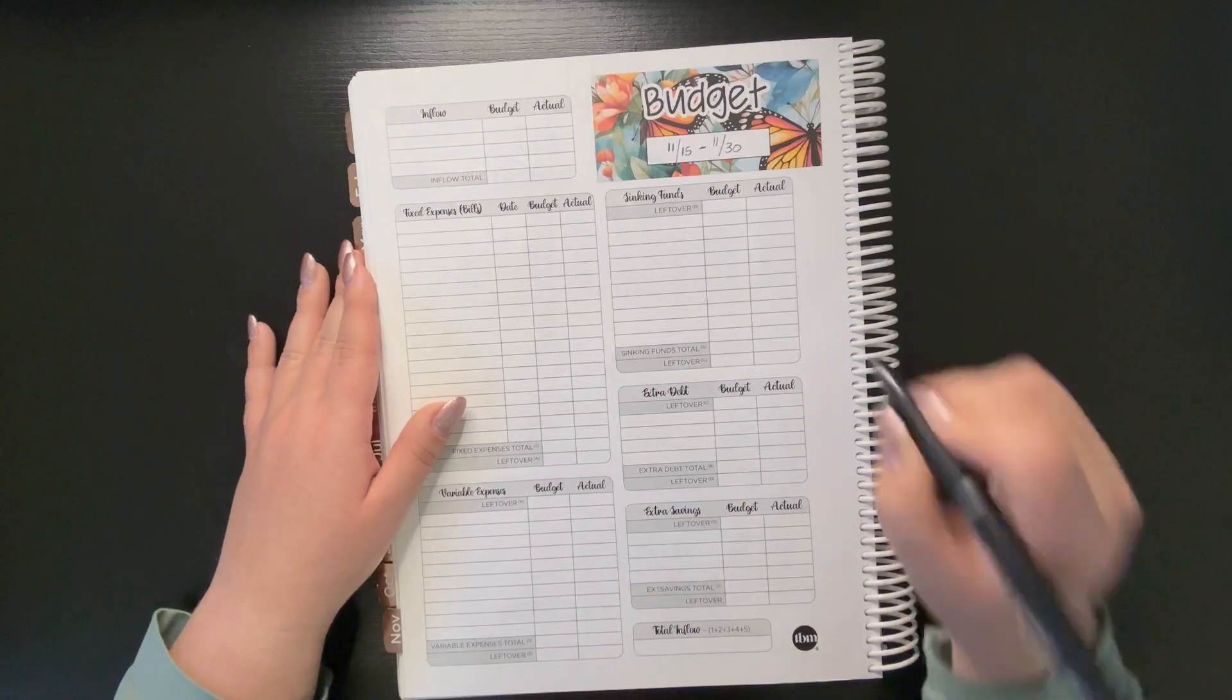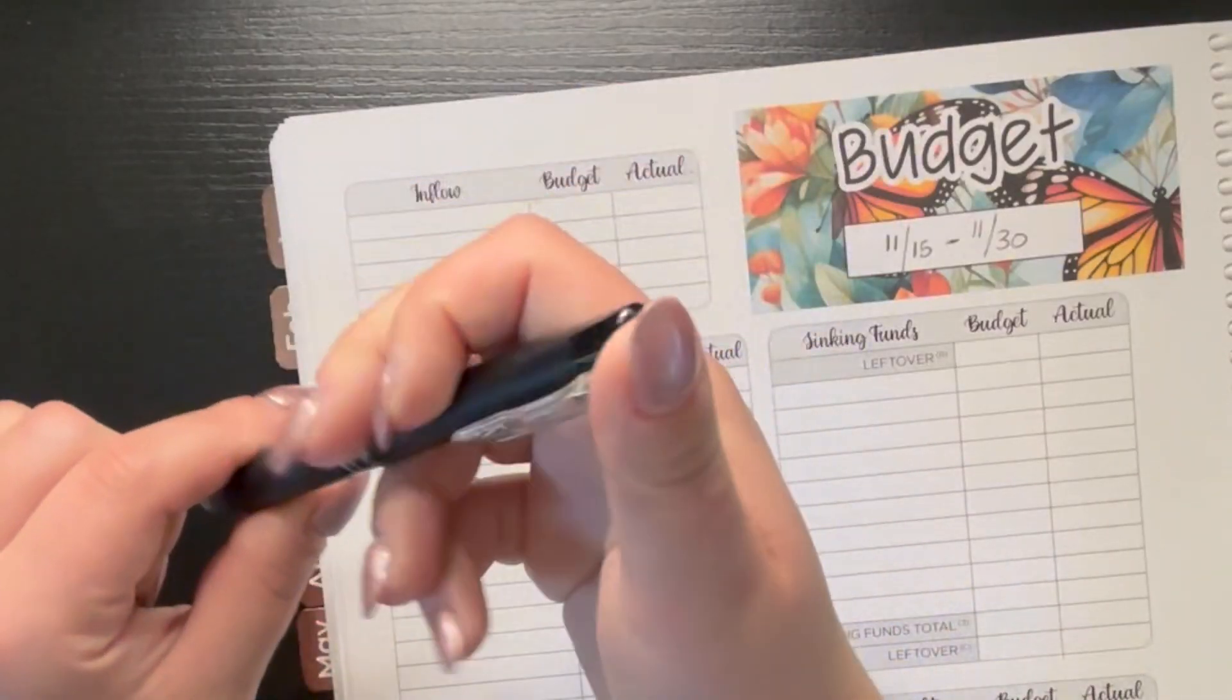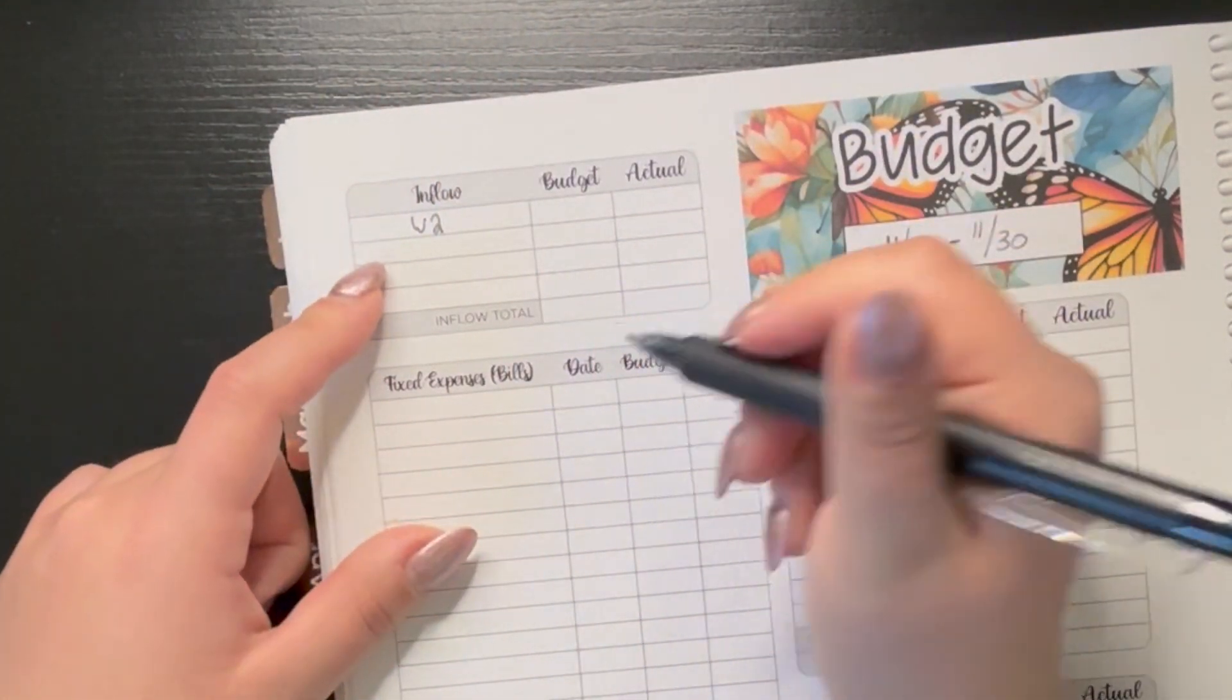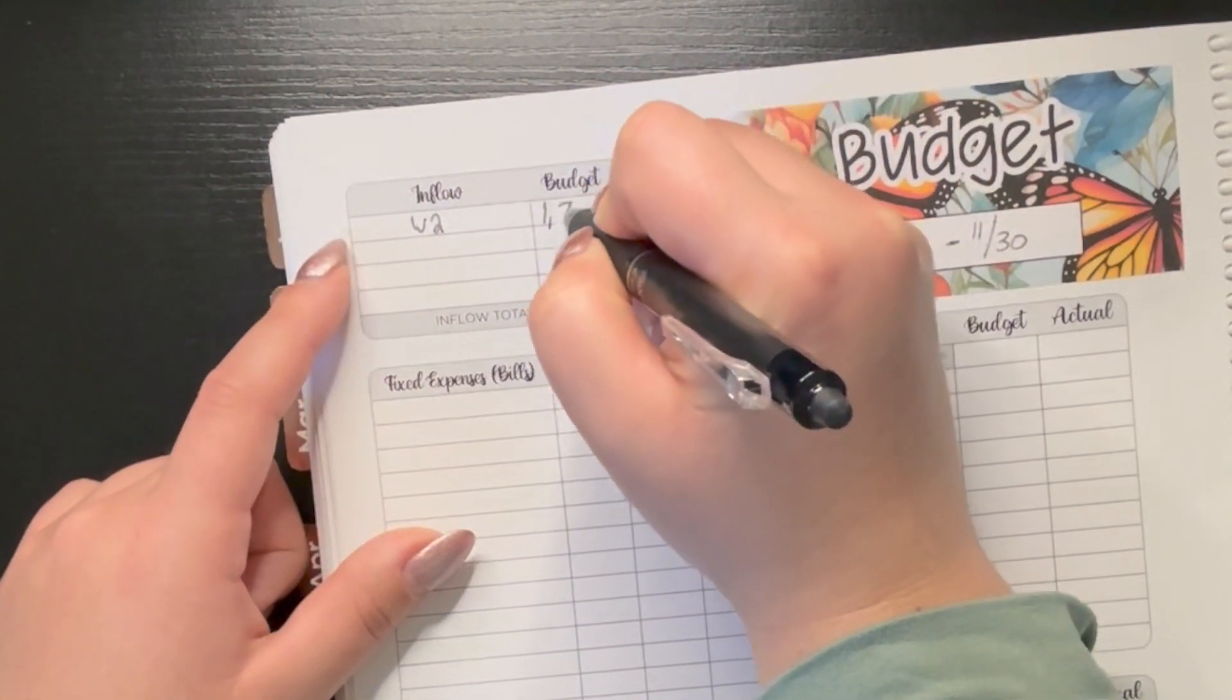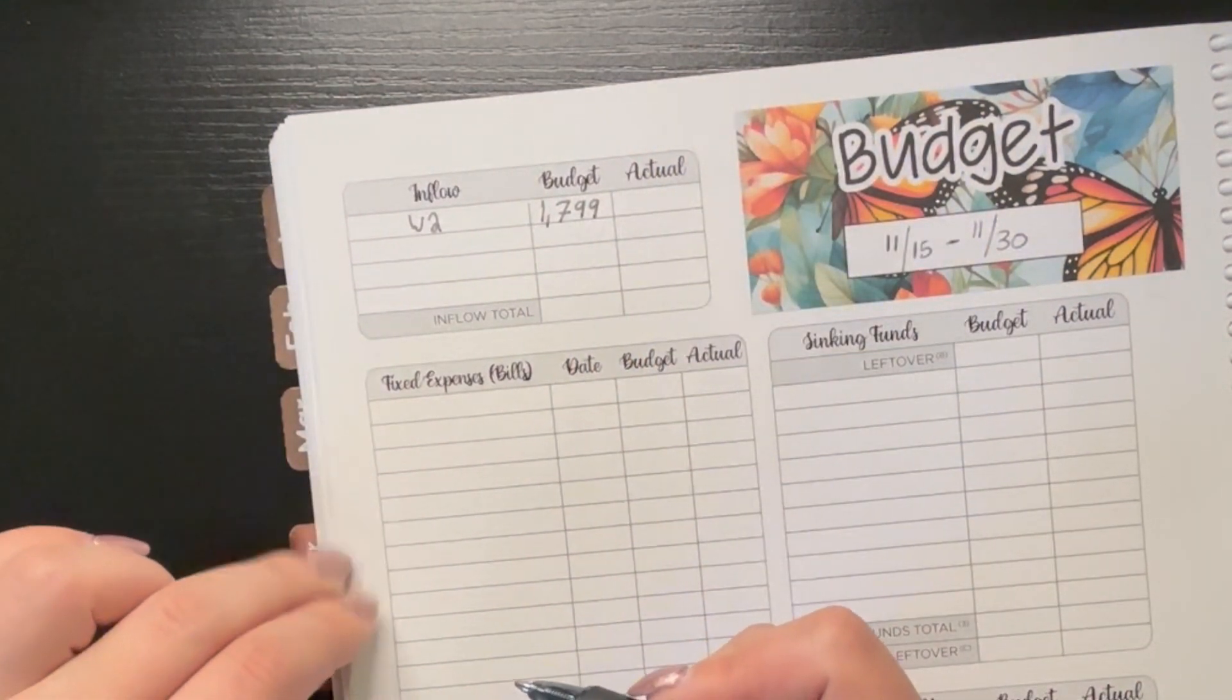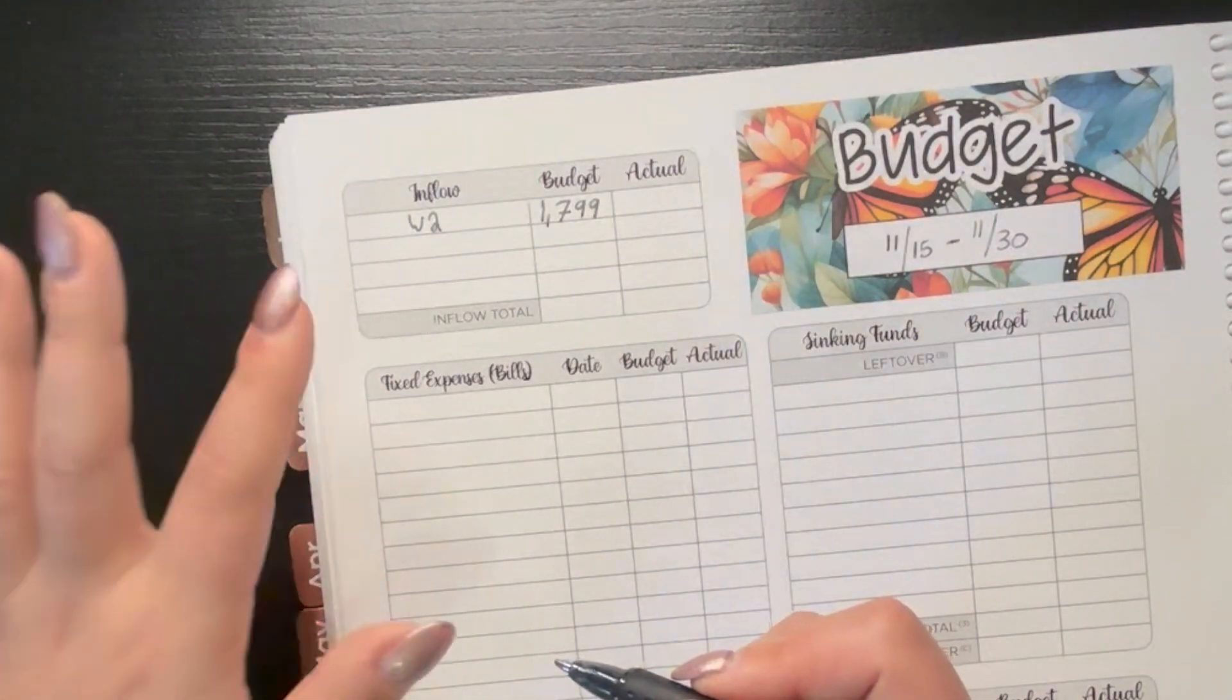We're going to jump right into things today. So we're going to start with the inflow. My W2 paycheck for my full-time job was $1,792. I get paid twice a month, which is about every two weeks, but some months it's a little bit more than two weeks.